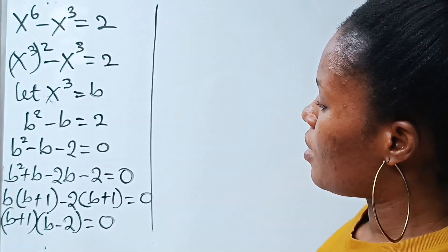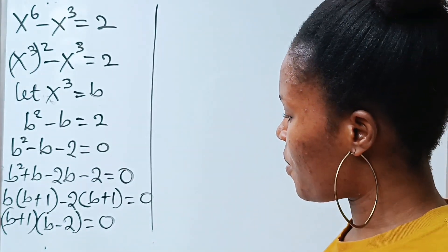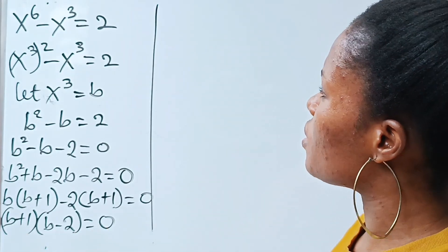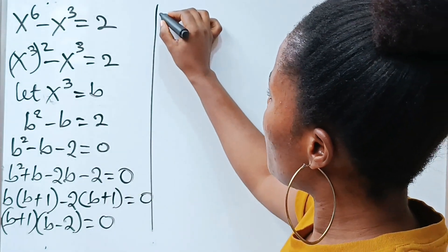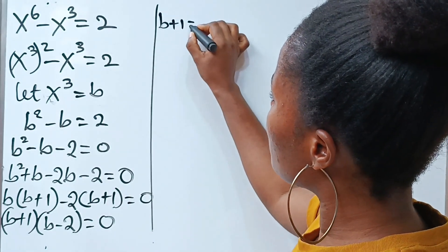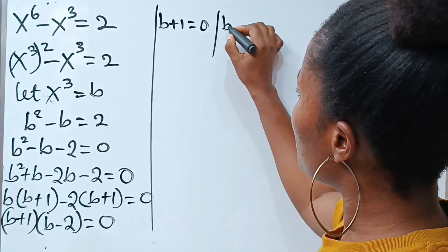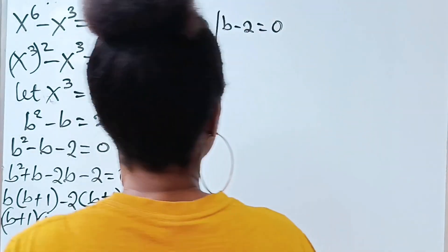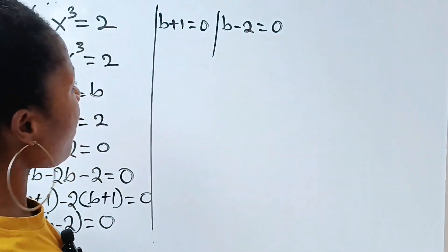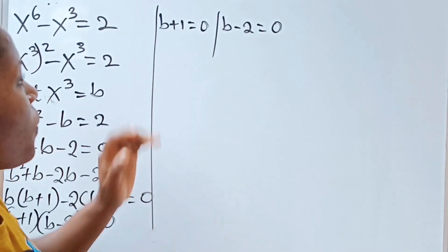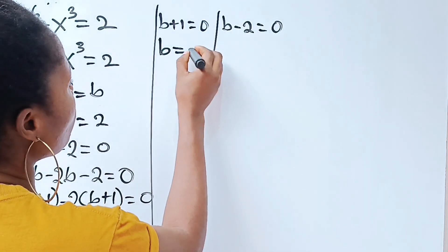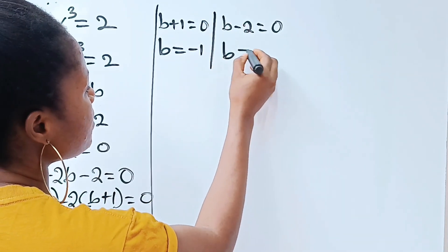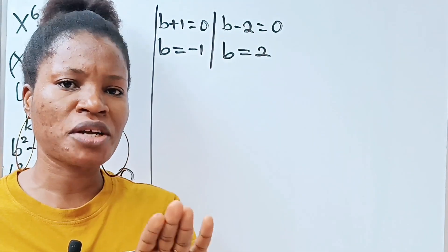So we have two values of b: b plus 1 equals 0 and b minus 2 equals 0. From equation 1, b equals minus 1, and from equation 2, b equals 2. Tread with caution — we are not looking for the value of b, recall we are looking for the value of x.